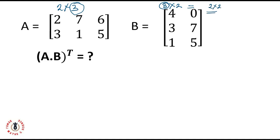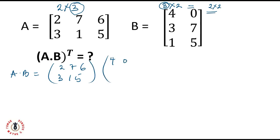We explained this in our lesson on multiplication of matrices. In case you missed that lesson, please check the description below where we've placed a link to that lesson. So A times B: matrix A is 2, 7, 6, 3, 1, and 5, multiplying matrix B which is 4, 0, 3, 7, 1, and 5.